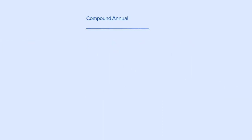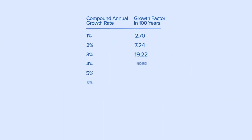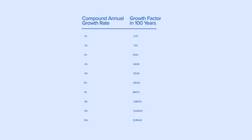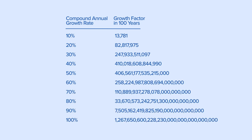This table shows the factor value in 100 years based on annual compounding rates ranging from 1% to 10%. This table shows the factor value in 100 years based on annual compounding rates ranging from 10% to 100%.